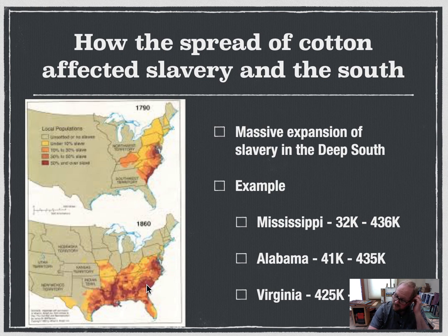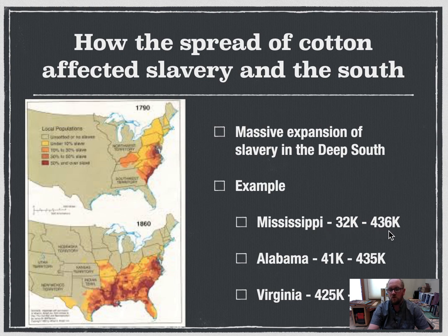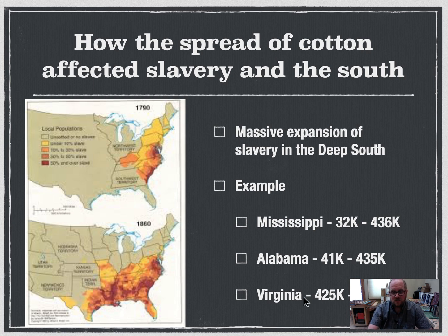In South Carolina and Louisiana, slaves actually outnumbered the white population. You see massive expansion of slave population — in Mississippi going from 32,000 to 430,000; Alabama, 41,000 to 431,000. You actually see a decrease in states like Maryland, Delaware, and Virginia. They still had slave populations, but a decreasing amount. Pretty much what Virginia was doing was selling off offspring slaves — any time a slave would have children, they would sell those off into the Deep South regions.